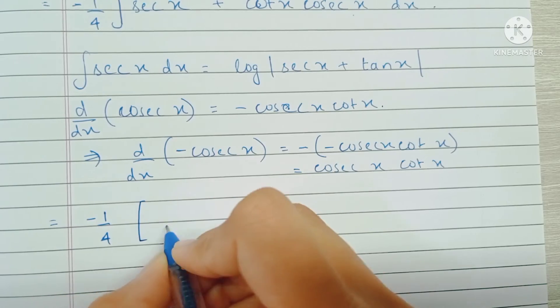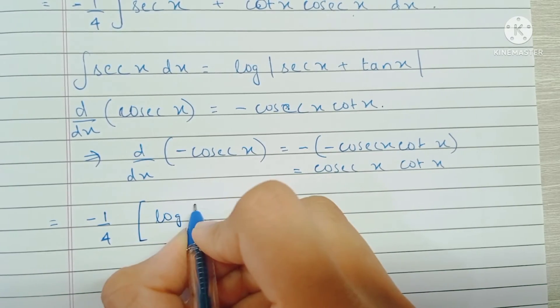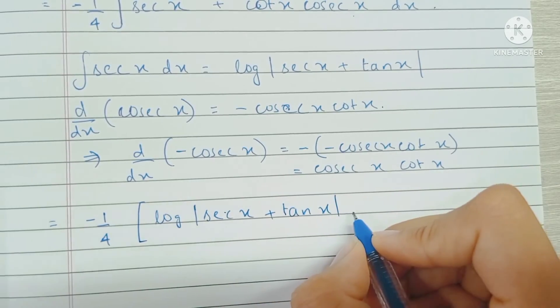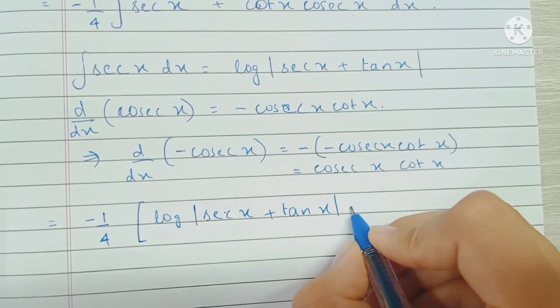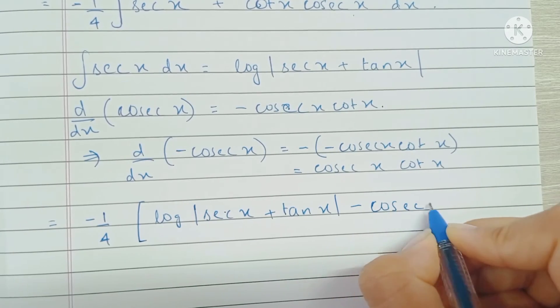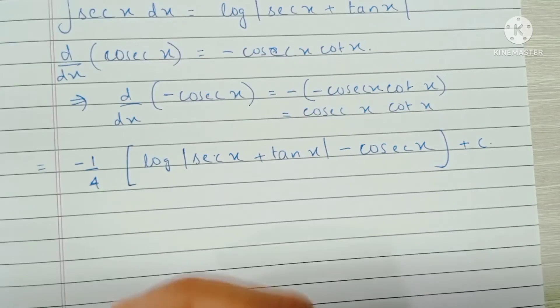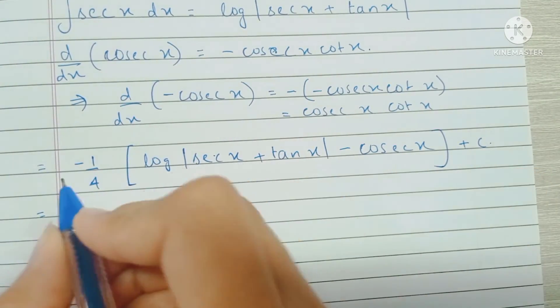Let's substitute this and we get the final answer as log of mod of sec x plus tan x, and we have minus cosec x, and we have an arbitrary constant plus c.